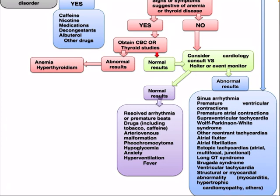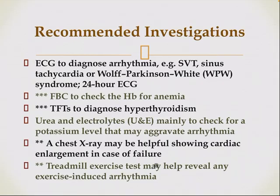If the result is normal, the differential diagnosis may include resolved arrhythmias or premature beats, drugs including tobacco and caffeine, arteriovenous malformation, pheochromocytoma, hypoglycemia, anxiety, hyperventilation, and fever.